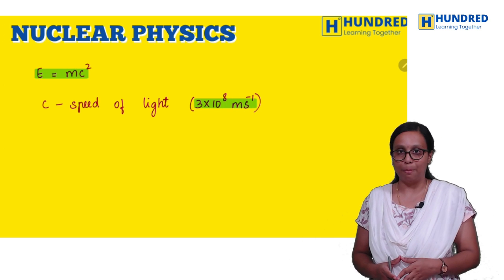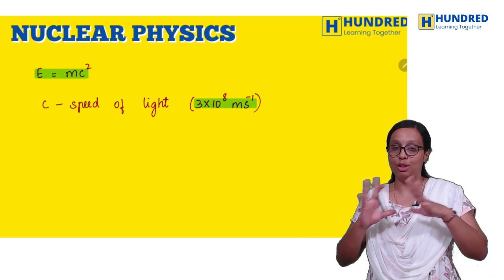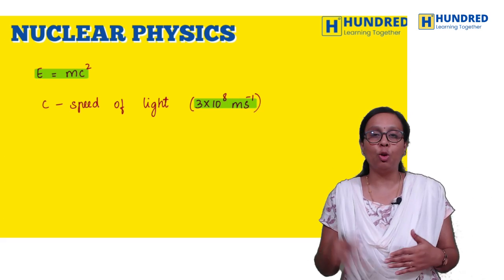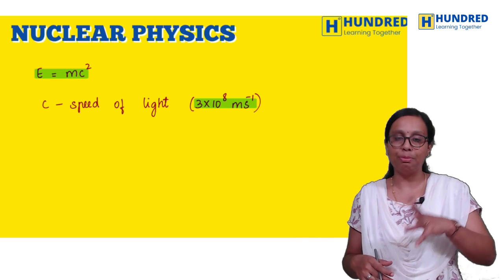Nuclear physics formula: E equals mc squared. Speed of light: 3 into 10 to the power 8 meters per second. This is about physics formulas chapter-wise. Study one chapter after that, you can learn very easily.